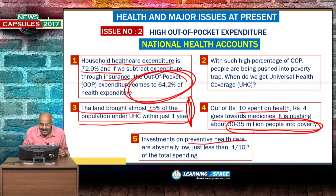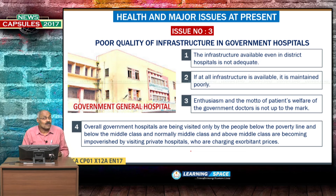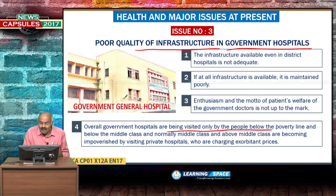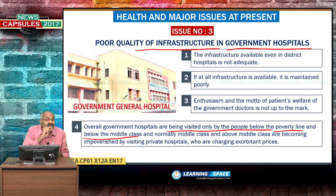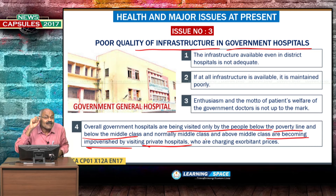Investments in preventive health care are abysmally low. Investing in good quality water and sanitation will ultimately reduce medical expenses for the people. Issue number three is poor quality of infrastructure in government hospitals. The infrastructure is not up to the mark, and in reality, government hospitals are visited only by people below the poverty line and below the middle class. The upper and middle classes are becoming impoverished by visiting private hospitals that charge exorbitant prices. The government is thinking of a standards organization that must work with true letter and spirit.